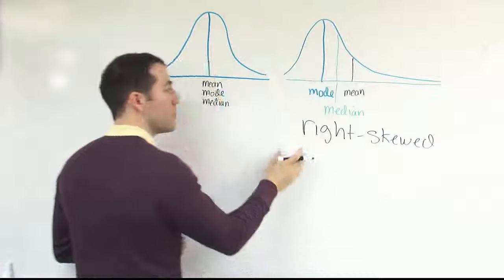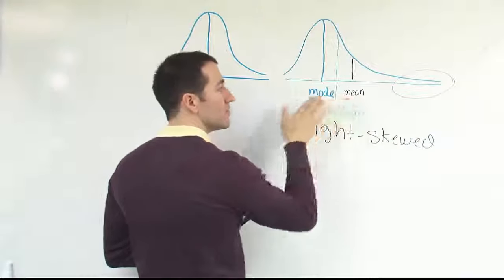And the reason why you want to remember right skewed is that it goes with the tail. Where the skinny tail is, that's where we get the name from. So right skewed. And it also means the mean will shift to the right.